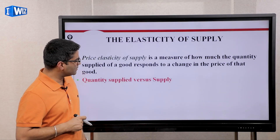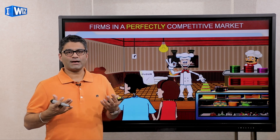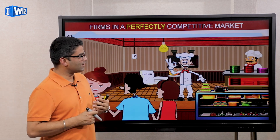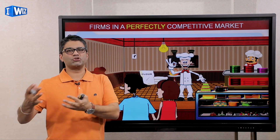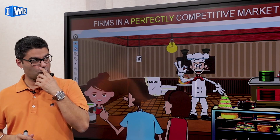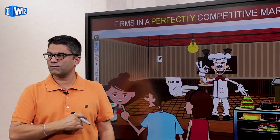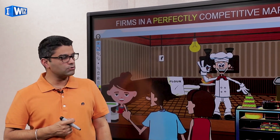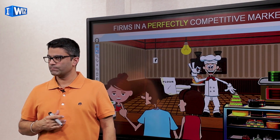In this video, what we're going to talk about is price elasticity of supply. Similar to when we talked about the demand curve — we said if the price of a good goes up, how much less do consumers buy — now that we've derived the supply curve, we're going to ask how much more or less do producers sell if the price changes.